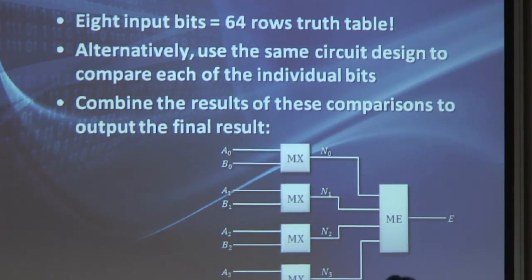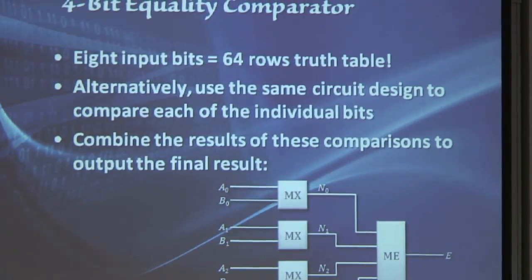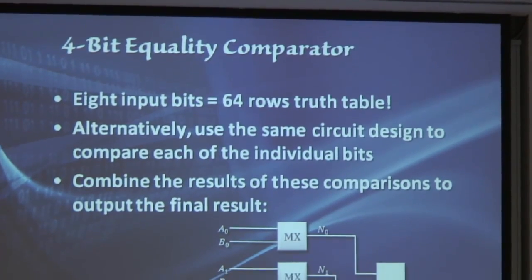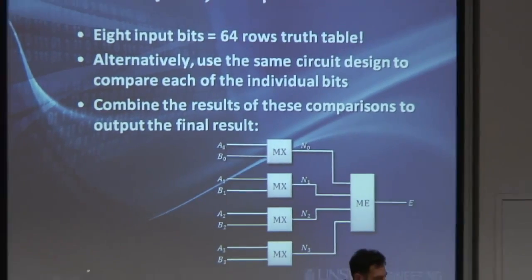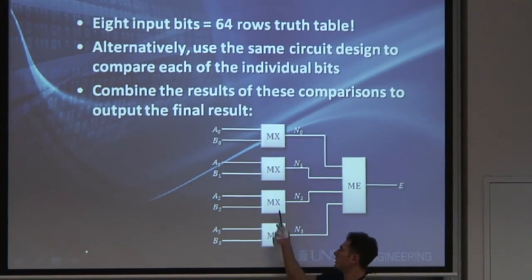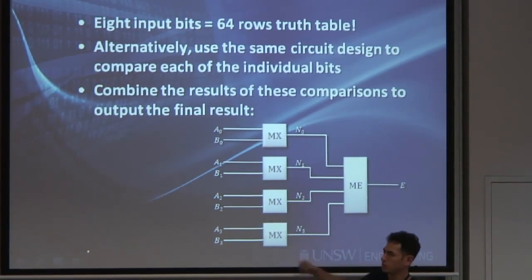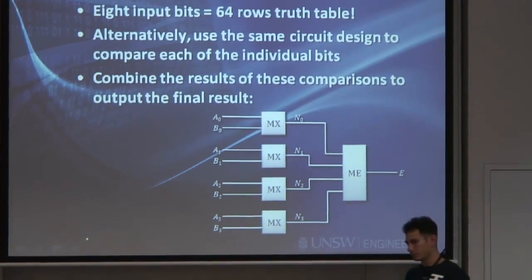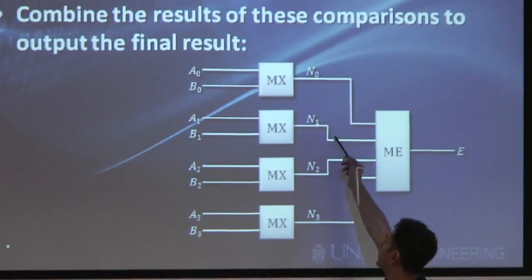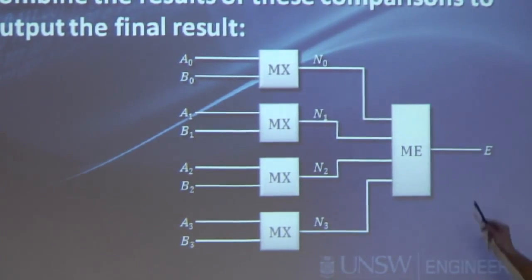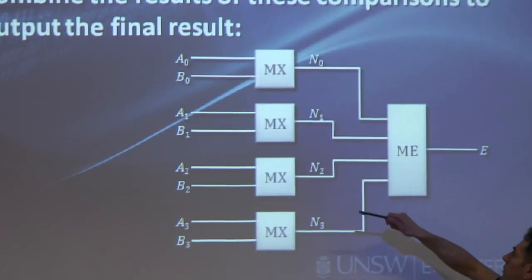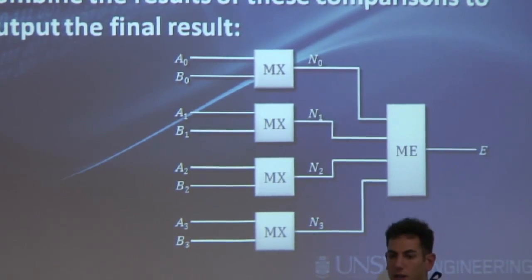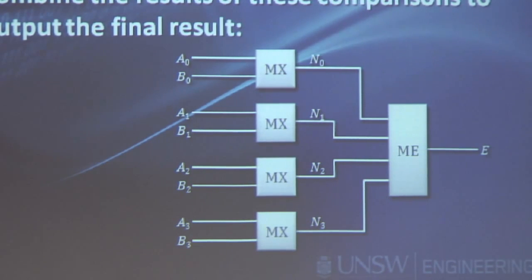Alternatively, we could say, well, the operation we make on every matching bit is pretty much the same. We want to output a 1 if A0 is equal to B0, if A1 is equal to B1, and so on. So we can design those blocks here that only compare the individual bits, so A0 to B0. And then each one of them will just output whether those two bits are equal to each other, and then have another block here that will take those four inputs, and only if all four of them are equal to each other, will then output a 1 at the output. So this design obviously will be much simpler than try to come up with a truth table with 64 different rows.